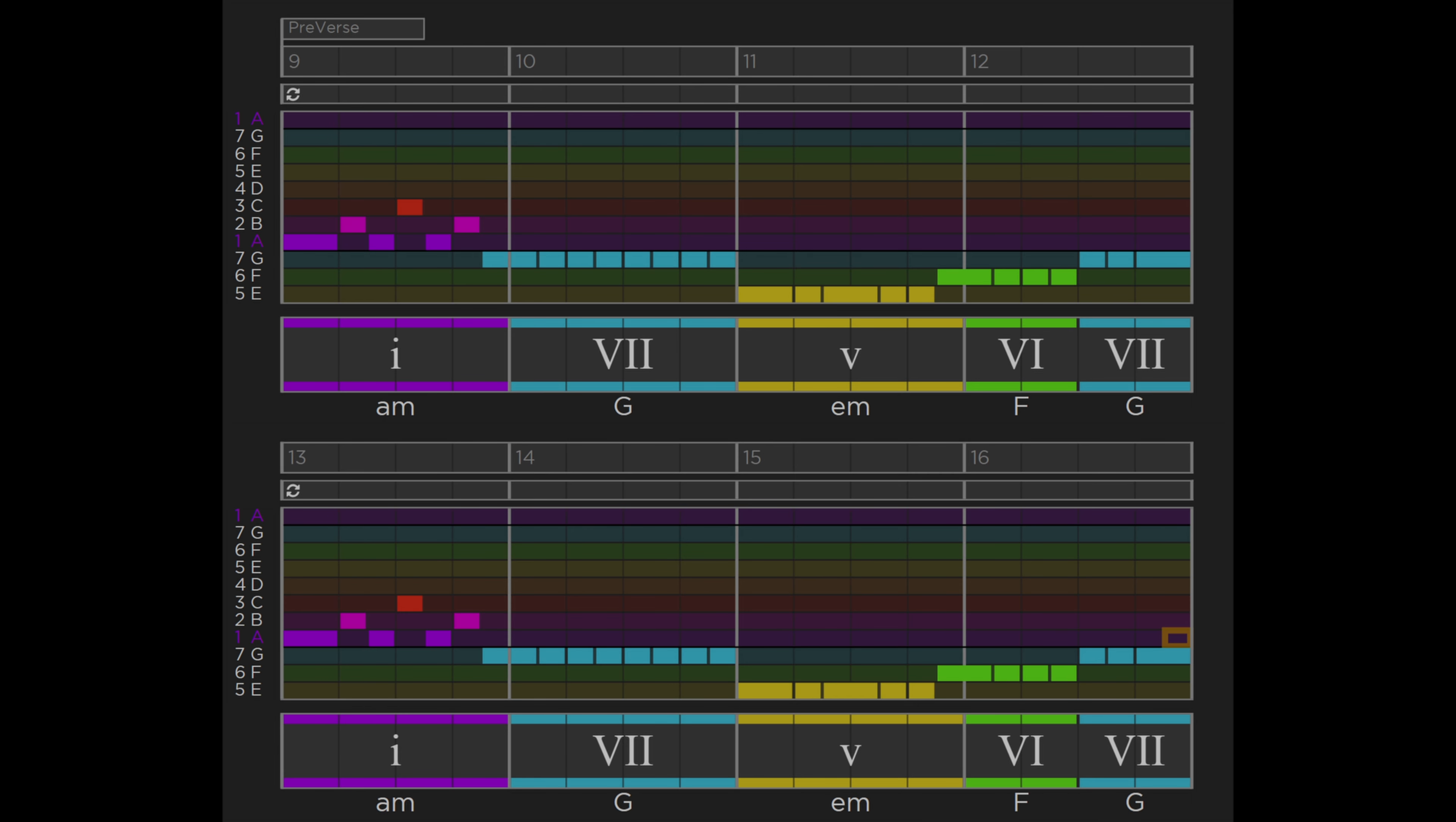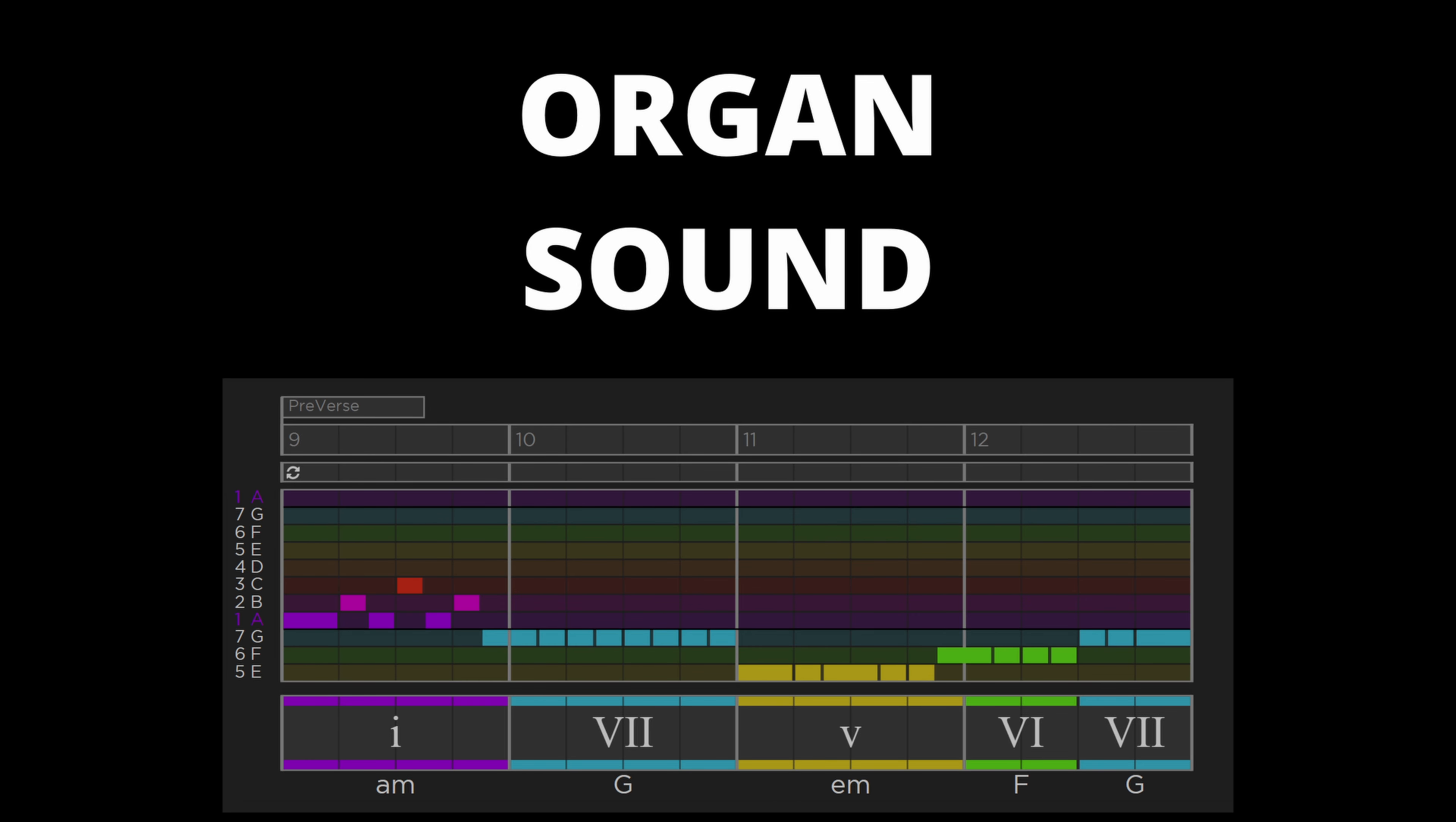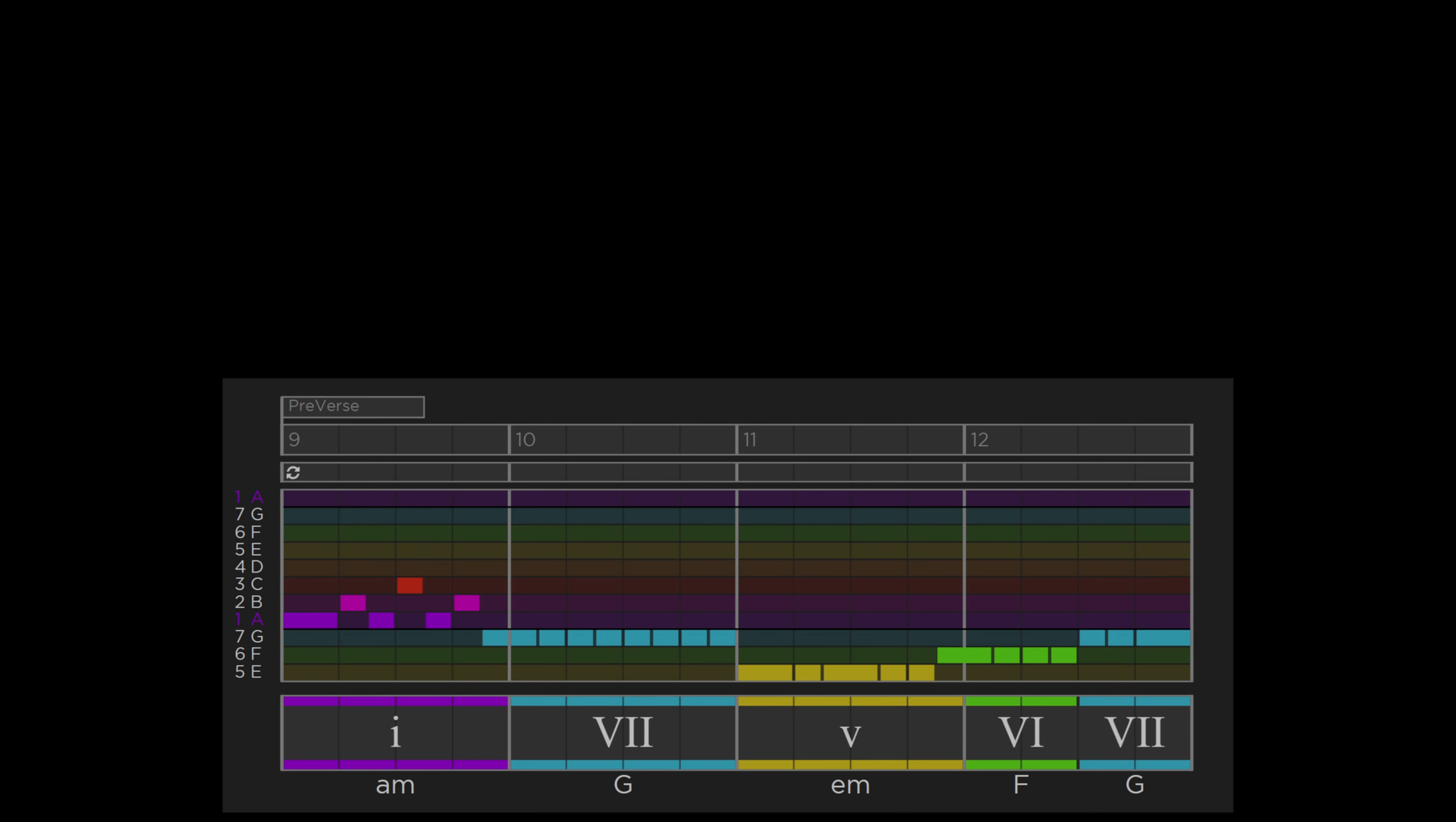Then at around 25 seconds into the song we hear the pre-verse. The pre-verse is a short eight bar section and only features once in the song. The organ sound is brought to the front of the mix for the first time. The guitar switches to a more distorted rock sound here and begins to play A minor, G major, E minor, F and G chords. All chords are bar chords except for the open E minor.